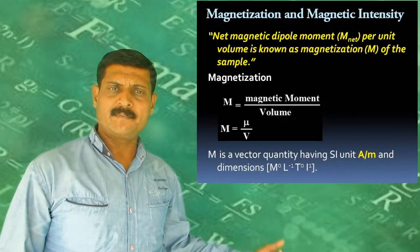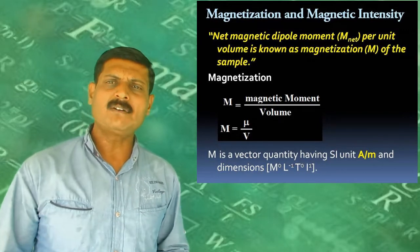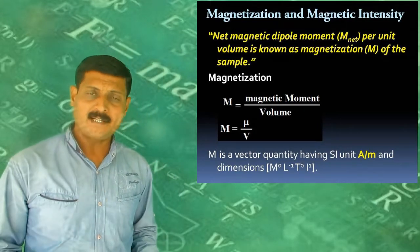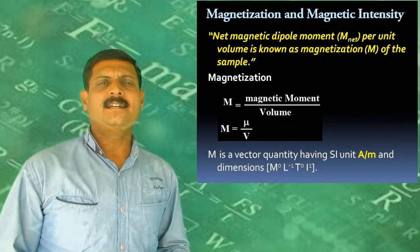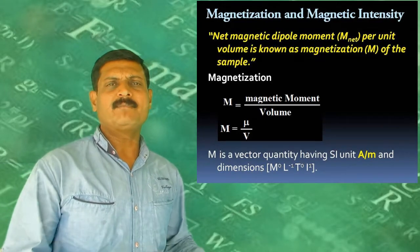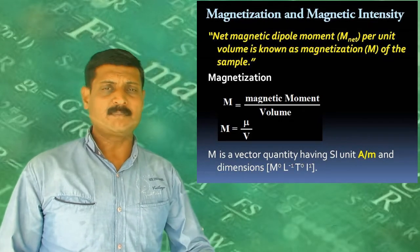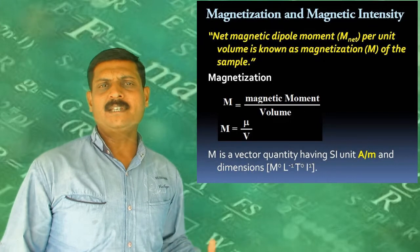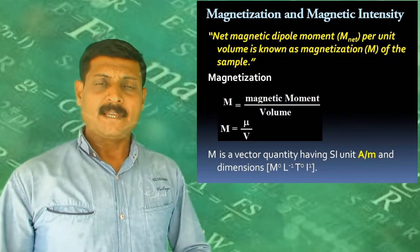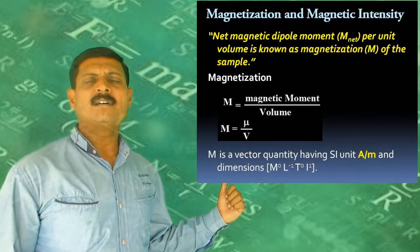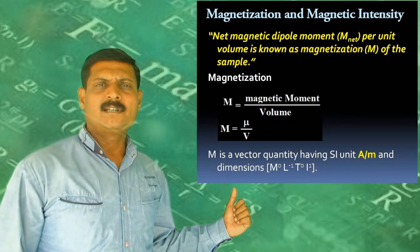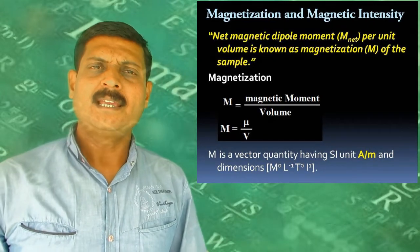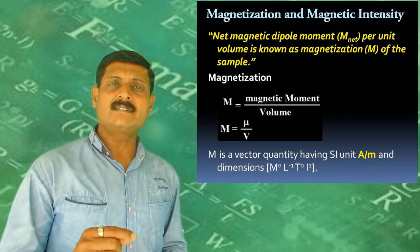Now we look at some key definitions. First, the magnetization vector, also called intensity of magnetization, denoted by capital M. Magnetization is defined as the magnetic dipole moment per unit volume: M = μ/V. Its SI unit is ampere·meter² per meter³, which equals ampere per meter. Magnetization is a vector quantity.